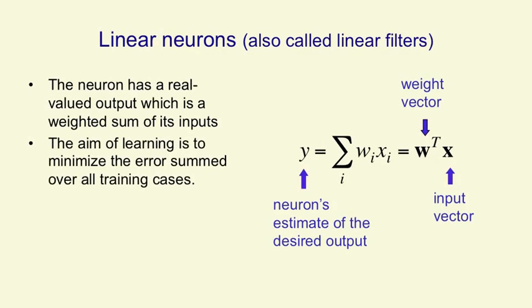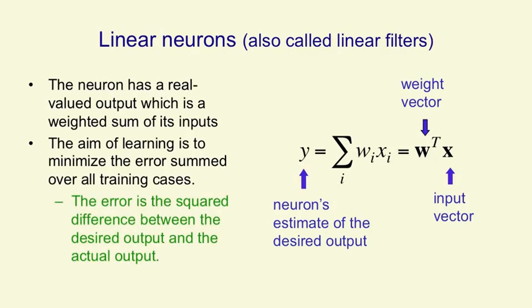The aim of the learning is to minimize the error summed over all training cases. We need a measure of that error, and to keep life simple, we use the squared difference between the target output and the actual output.